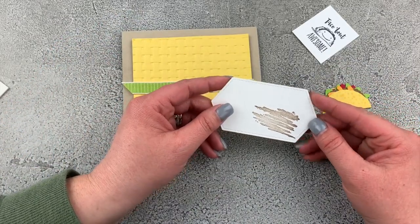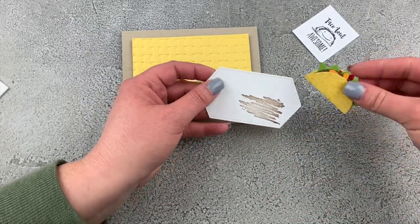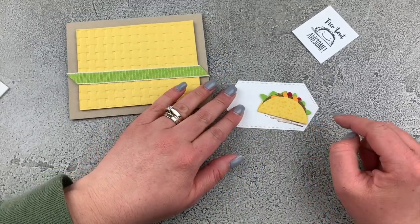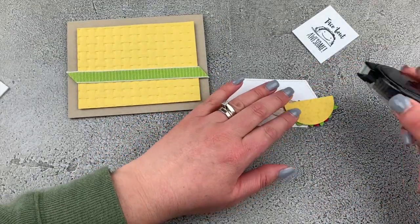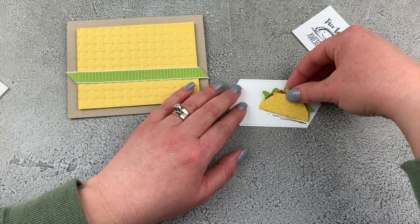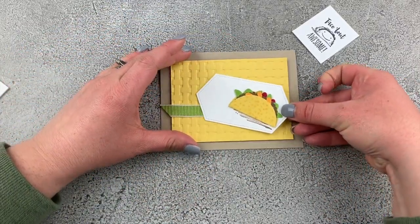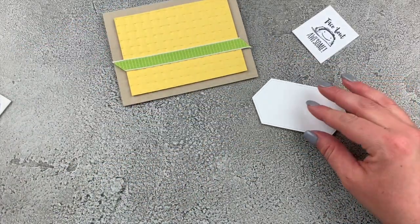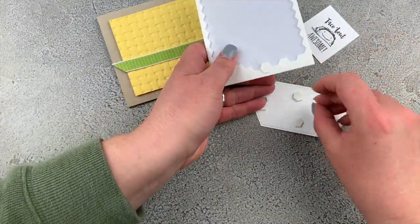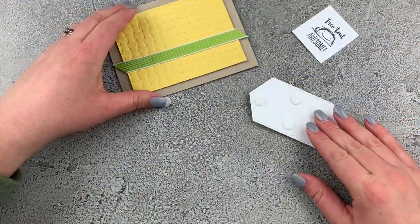We have our label piece, and this is the piece that I stamped that swish on - this is the shadow underneath our taco. We're going to put our taco down onto the label. There we go. We've got a little shadow under our taco. This is going to go onto our card front, so just put a few dimensionals on the backside.